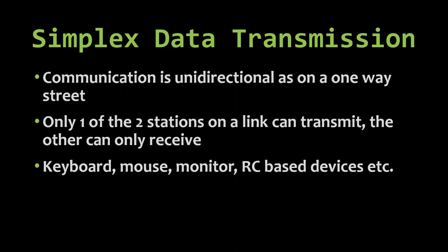A mouse sends instructions from mouse to CPU — nothing returns from CPU to mouse. Similarly, monitors, printers, and speakers receive data from CPU — none of that data goes back from output devices to CPU. That is unidirectional data transmission, called simplex. Also, all RC-based devices — devices operated through a remote control — follow simplex data transmission, meaning the signal can be sent from the remote control to the device only; nothing will return from device to remote control.